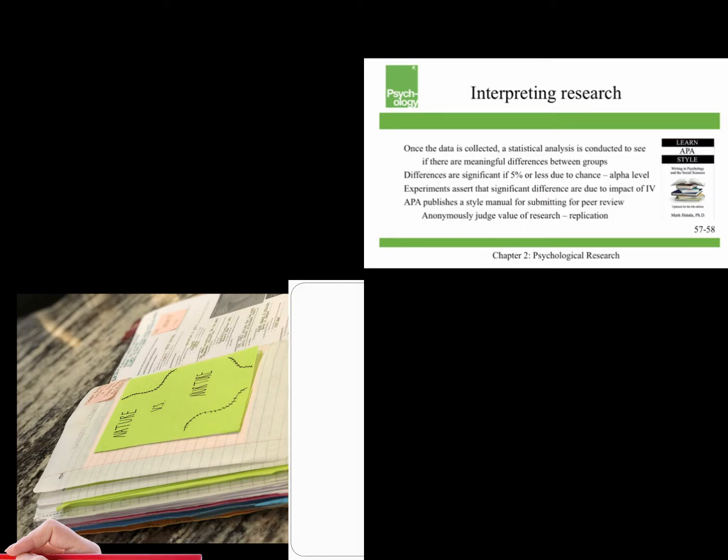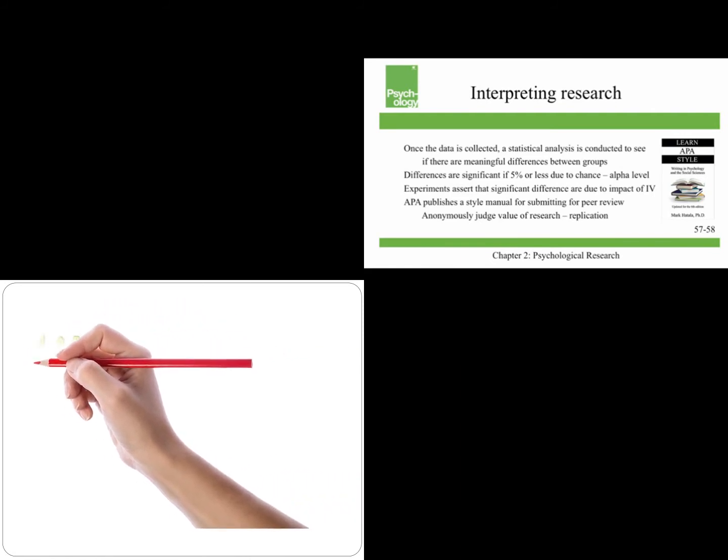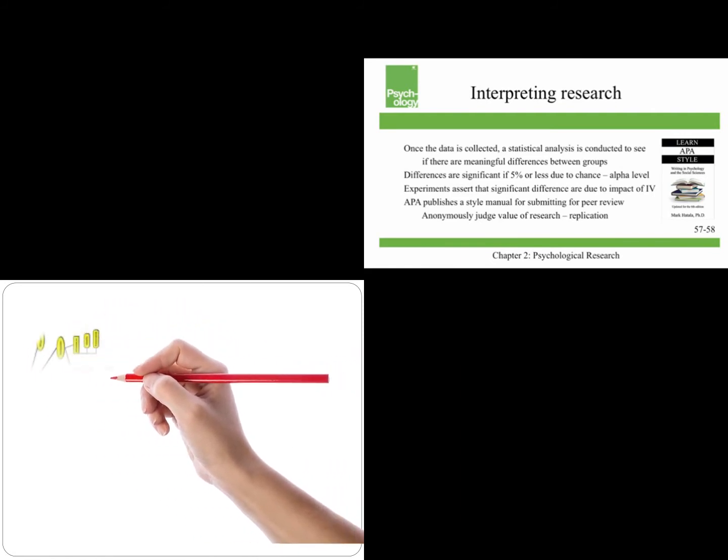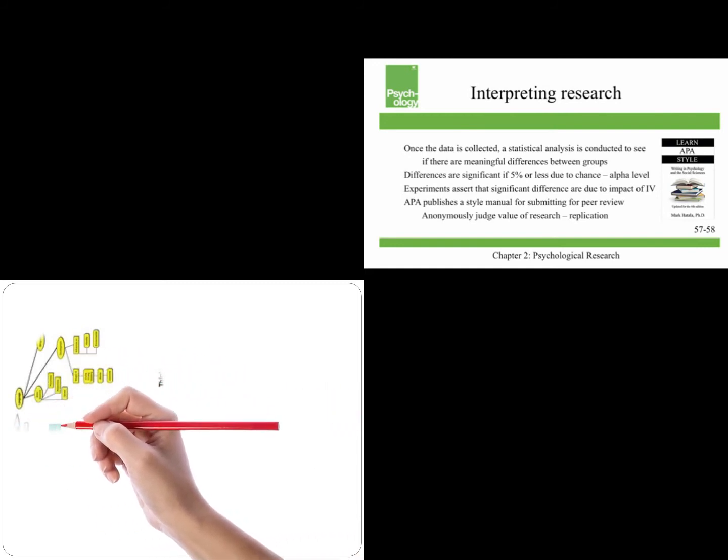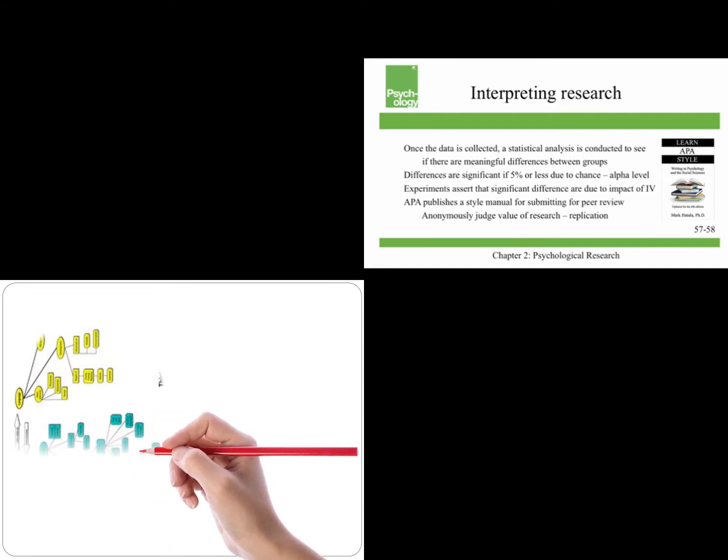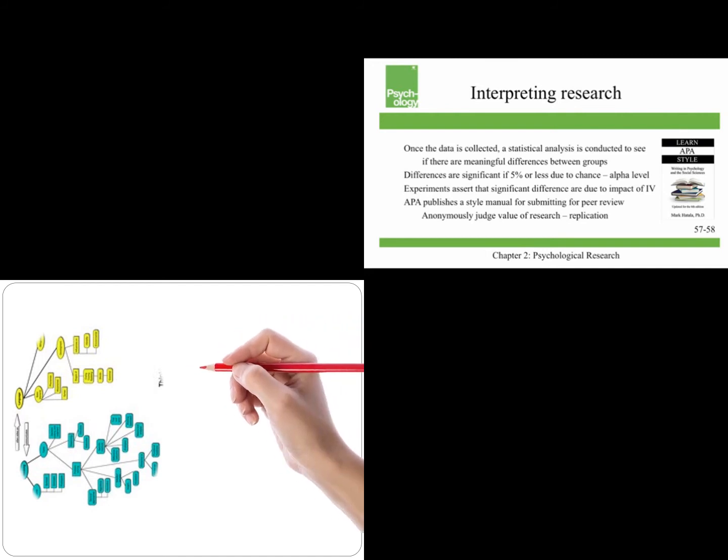Once your data is collected, a statistical analysis is conducted to see if there are meaningful differences between your groups. Differences are significant if there's a 5% or less likelihood that that result is due to chance, and that's what's known as the alpha level.